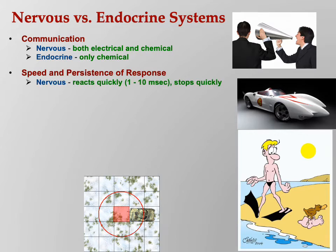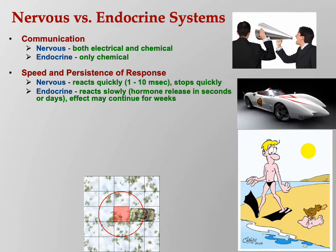With respect to speed and persistence, the nervous system is very fast — just milliseconds. Once the action potential stops, the response stops, unless you get several action potentials quickly in a row. Endocrine is very different — hormones are released in seconds or days, and the effect may continue for weeks. Think of bodybuilders who use anabolic steroids to bulk up — they don't wake up the next day all bulked up. It takes days or weeks. So the endocrine system is a much slower response.